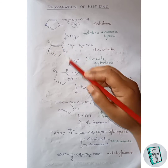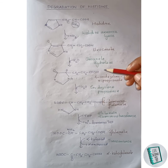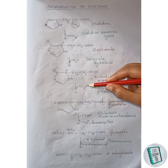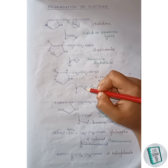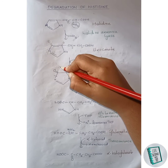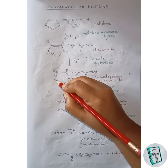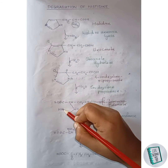This is 4-imidazolone-5-propionate. This compound, in the presence of imidazolone propionase, forms N-formiminoglutamate. Here also, addition of water occurs and cleavage of the bond takes place. The OH group of water attaches to this carbon and the hydrogen of water attaches to this nitrogen, forming N-H and C-OH. This is N-formiminoglutamate.